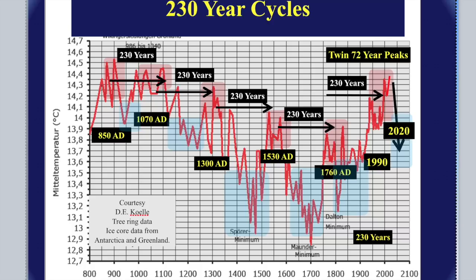But what that breaks down to individually, if you cut the whole period in half, is about 230 to 240 years. So can you introduce us to this 230-year cycle in planetary temperatures and basically where you think that is coming from?